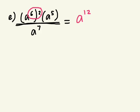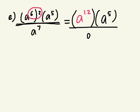That's going to be multiplied by 8 to the power of 5, and then all of that is divided by 8 to the power of 7. Let's simplify the numerator by multiplying powers — adding 12 plus 5 — giving us 8 to the power of 17 divided by 8 to the power of 7.